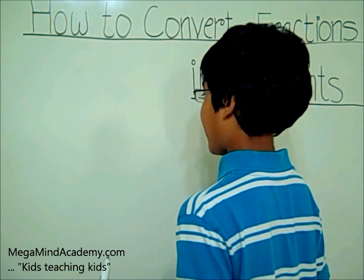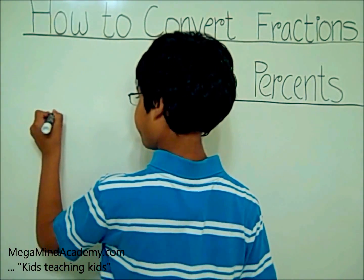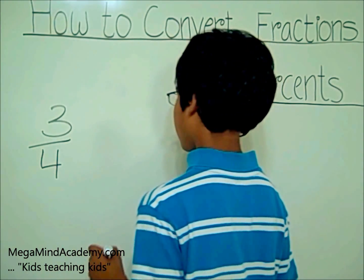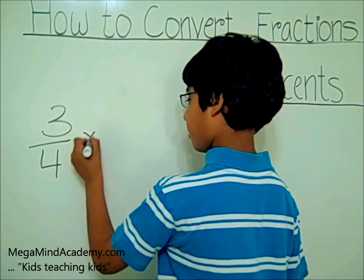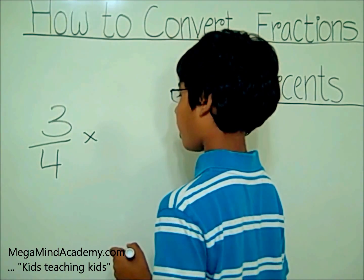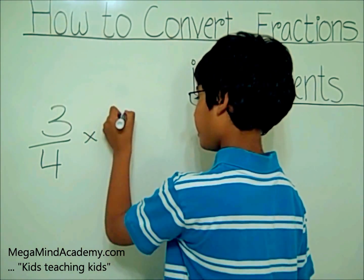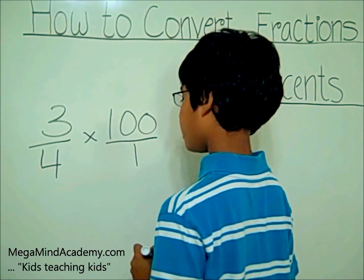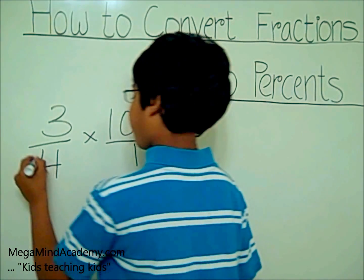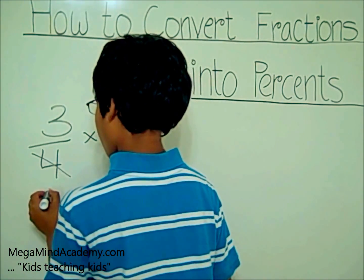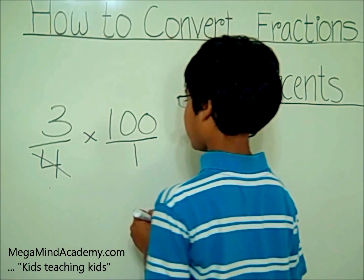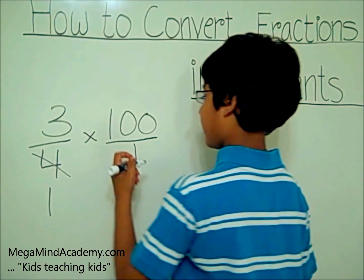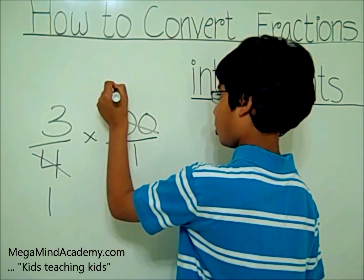Let's say our fraction is three-fourths. Let's multiply it by a hundred. The fraction for a hundred is hundred out of one. Since four times twenty-five equals a hundred, you cross the four, then you put one, then you cross the one hundred out, and you put twenty-five.